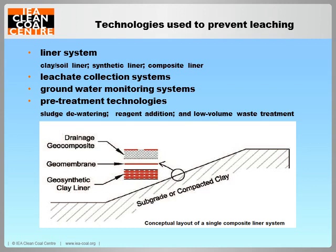Leaching can be controlled by the use of liners, leachate collection systems, diversion ditches, caps, and vegetation. Monitoring networks are used to ensure the performance of engineering controls in protecting groundwater and surface water resources.